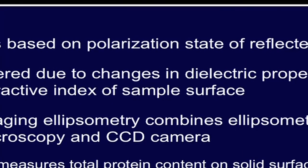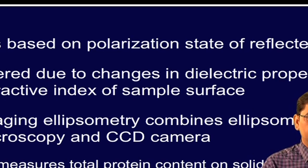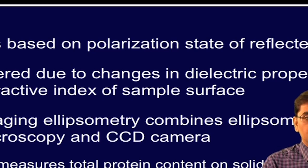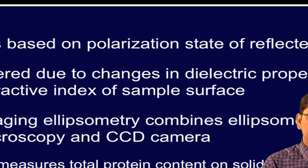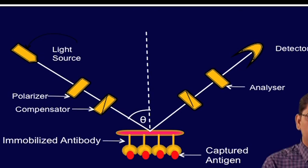Ellipsometry is based on the polarization state of the reflected light, which is altered due to the changes in the dielectric property or the refractive index of the sample surface. The imaging ellipsometry combines ellipsometer, microscopy and CCD camera, which can measure the total protein content on solid surface. In this slide, I have shown you a configuration for ellipsometry based label free technique.